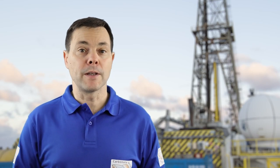A key figure for stratigraphy — perhaps an unlikely figure — is actually an ecclesiastic from Italy who lived in the 17th century: Nicola Steno. Steno came up with three principles that are still applicable today in stratigraphy.